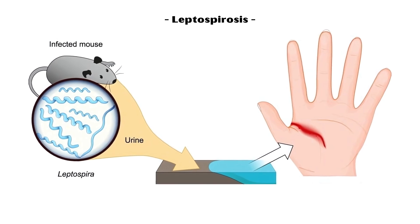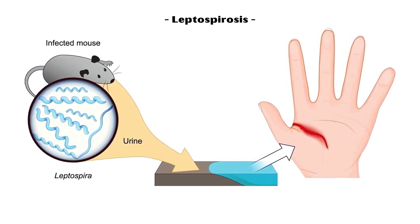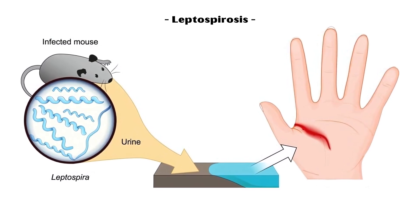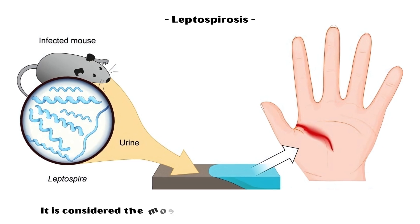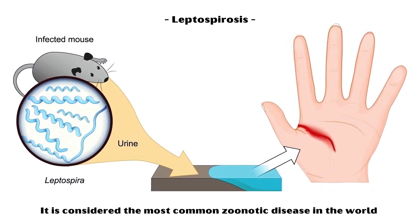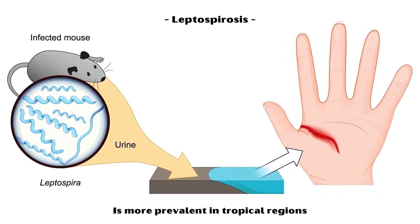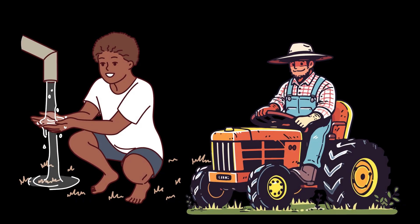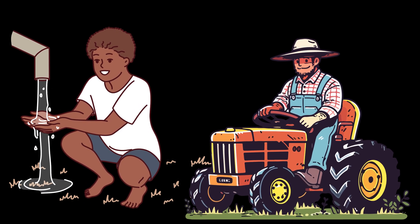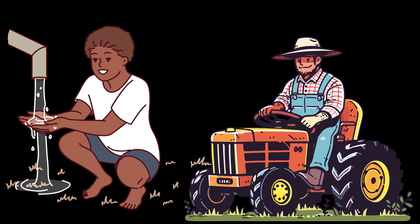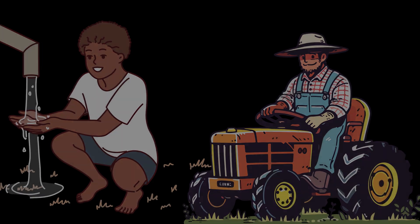Leptospirosis is an infectious disease of humans and animals caused by the spirochetes of the genus Leptospira. It is considered the most common zoonotic disease in the world and is more prevalent in tropical regions. The disease is commonly associated with poor sanitation and agricultural occupations where there is contact of animals with water.